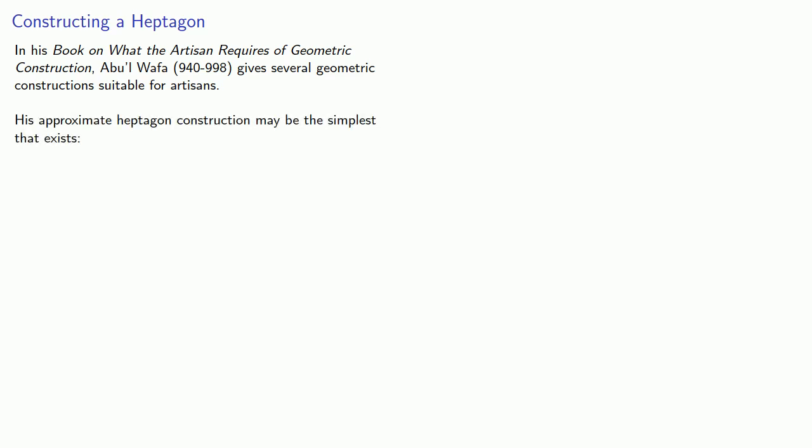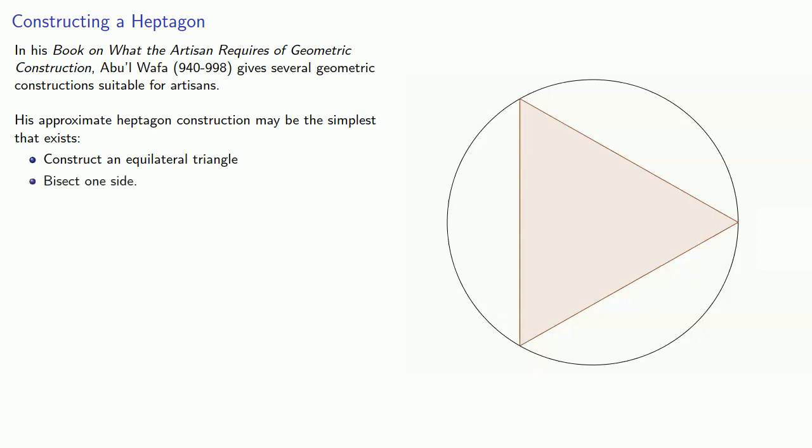Begin with an equilateral triangle inscribed in a circle. Bisect one side. And the bisected side approximates one side of a regular heptagon inscribed in the circle.